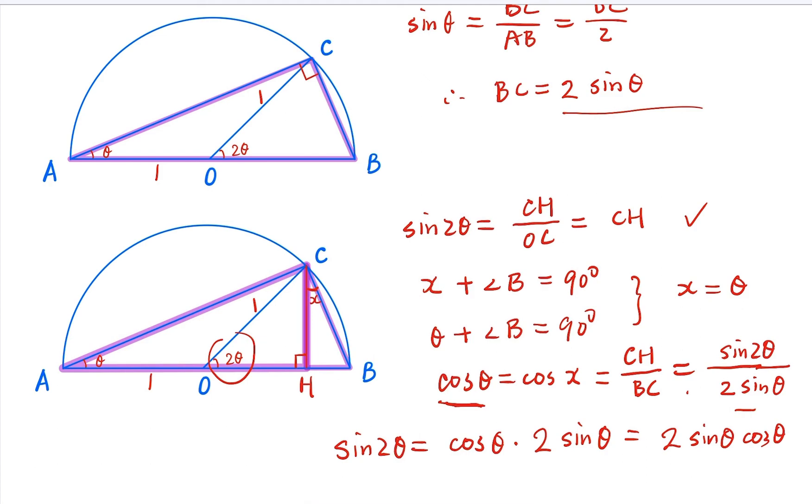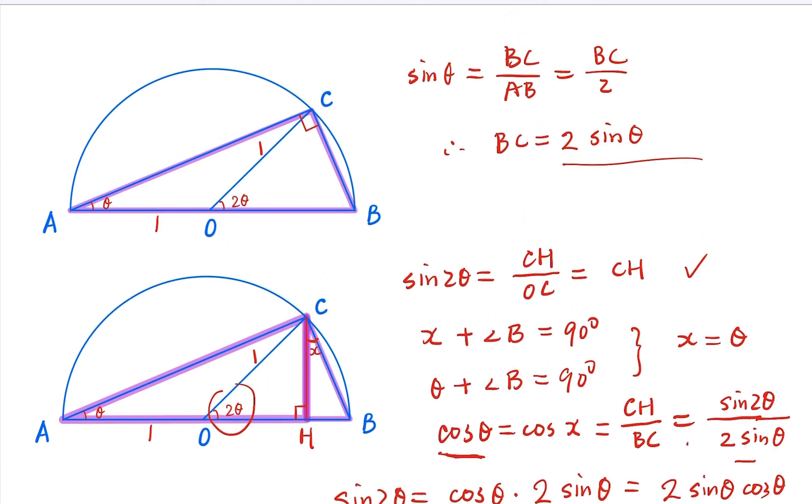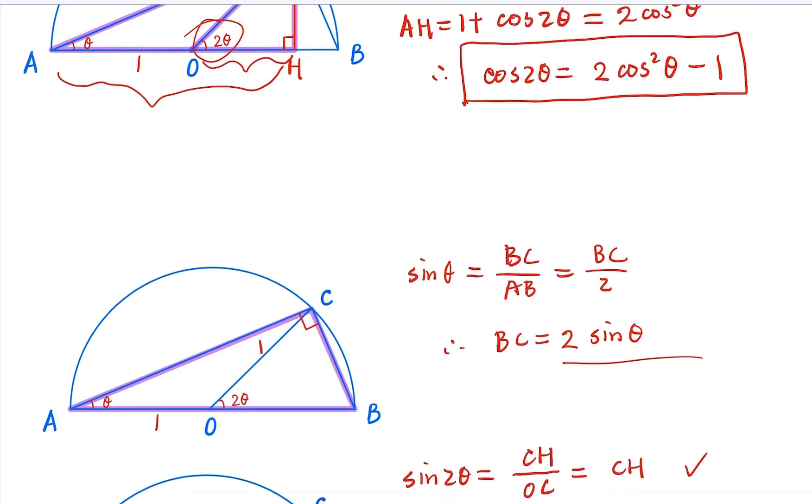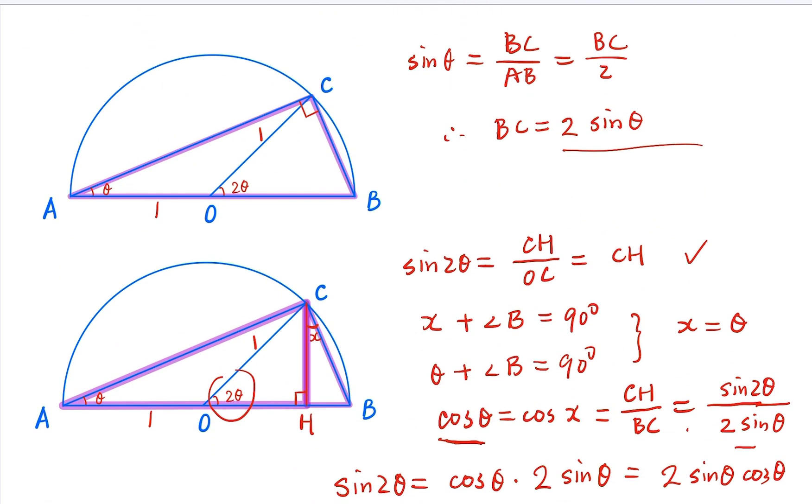That's the double angle formula for sine. And this one is for cosine. Both can be proven using the geometric construction here.